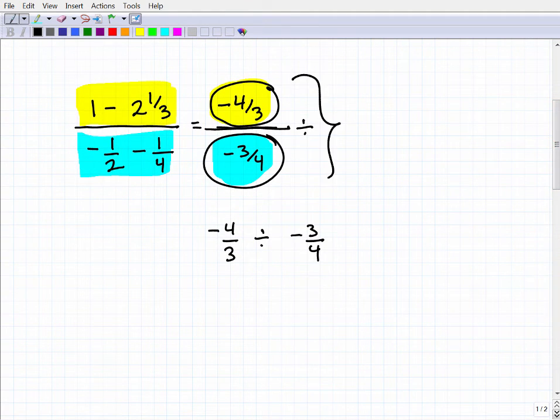We took it out of this complex form and we wrote it in a nice logical way where we can actually calculate this. So the way we do this is we're going to flip this fraction, take the reciprocal of it, and then turn this into multiplication. So this is going to be negative 4 thirds times negative 4 thirds, because I'm taking negative 3 fourths and I'm flipping it upside down. So now I have to finish this up by multiplying the numerators and denominators.